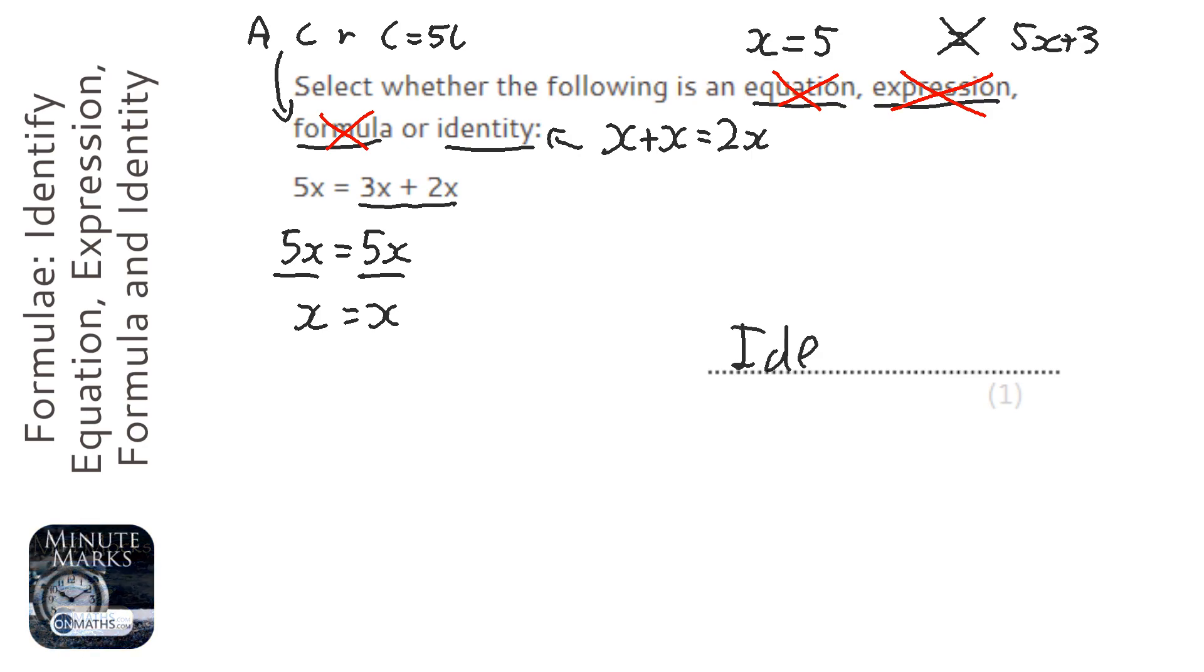So the answer is identity. Now, this is something that the more practice you do in identifying these, you get used to them pretty quickly, and you can identify the different four types.